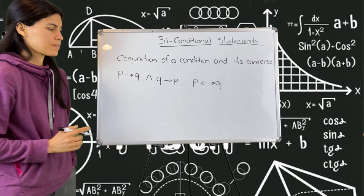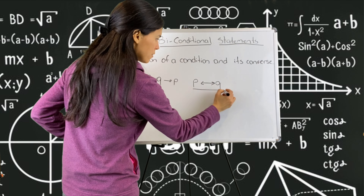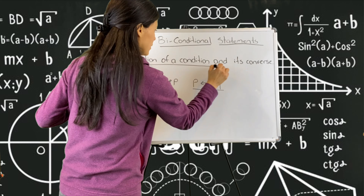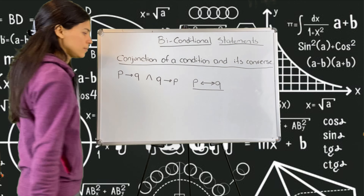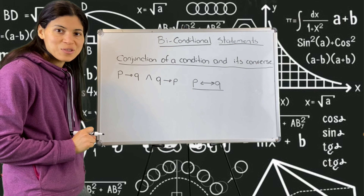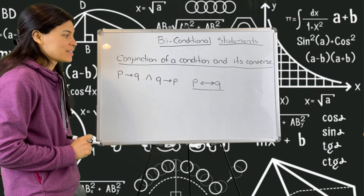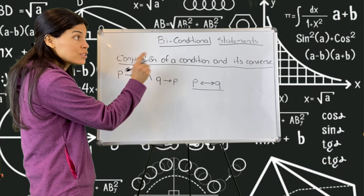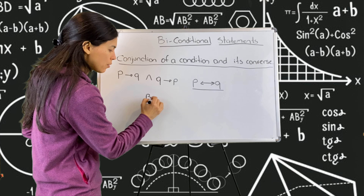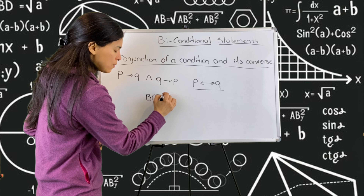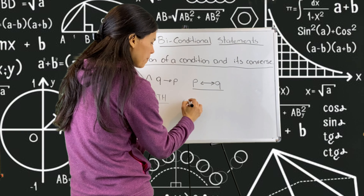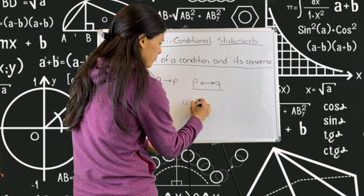This is written in your worksheet. So if P, then Q is the condition. And the converse of that is if Q, then P. So if both of those are true, the way we symbolize that biconditional statement is P and Q. This is what you have to write in your worksheet, along with some definitions.